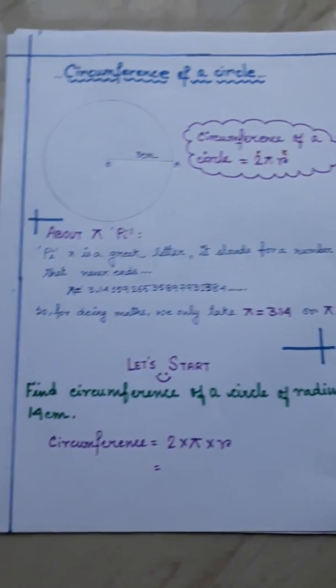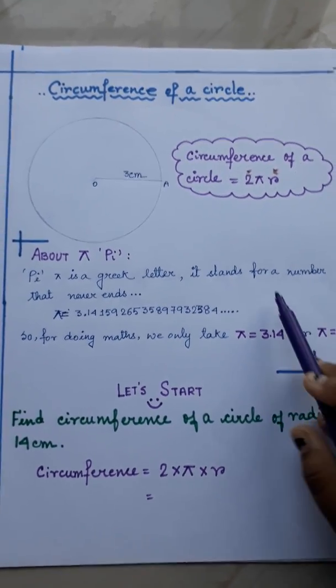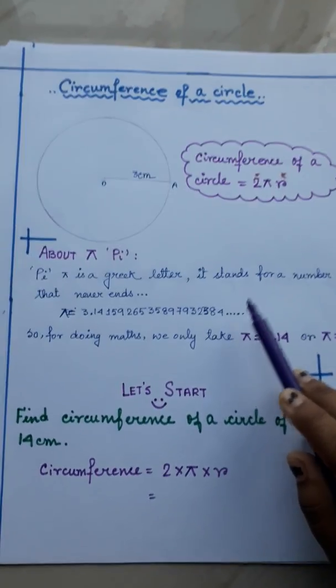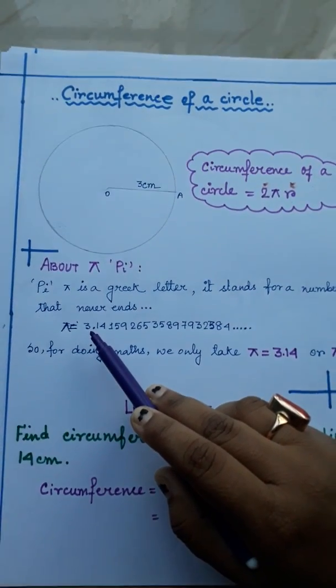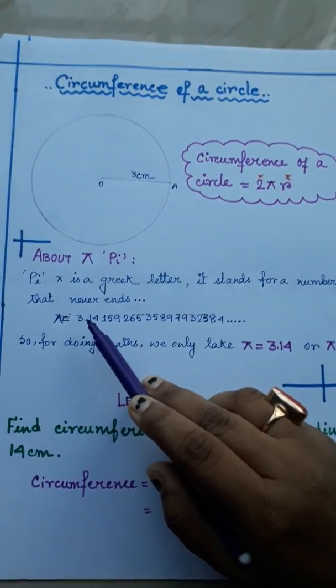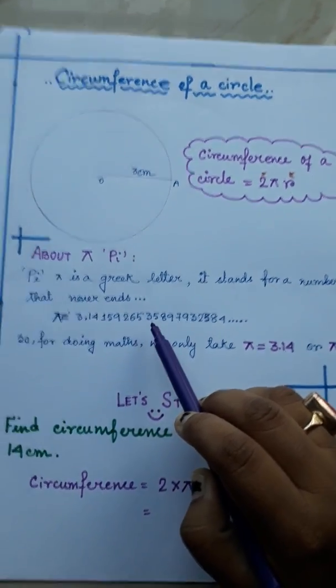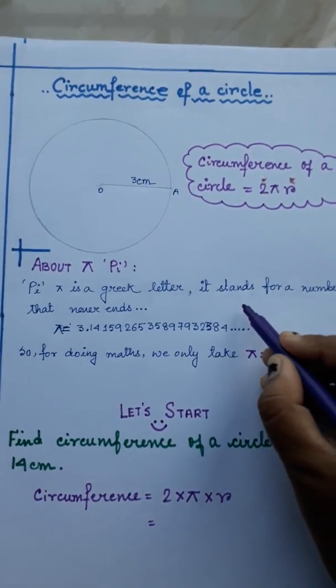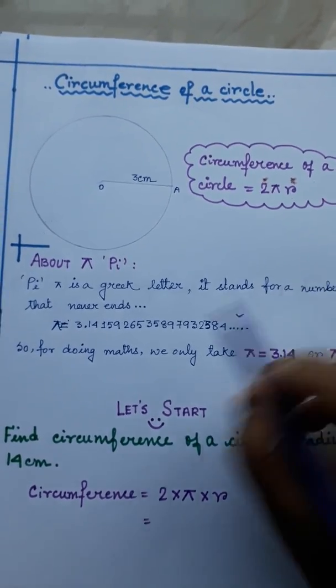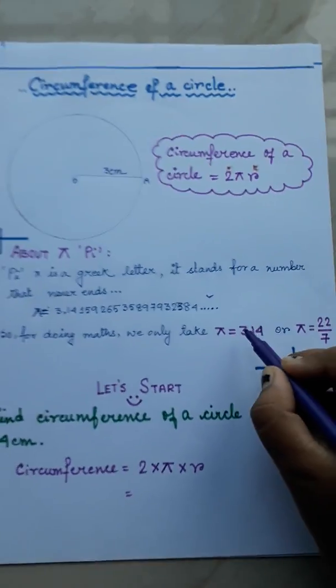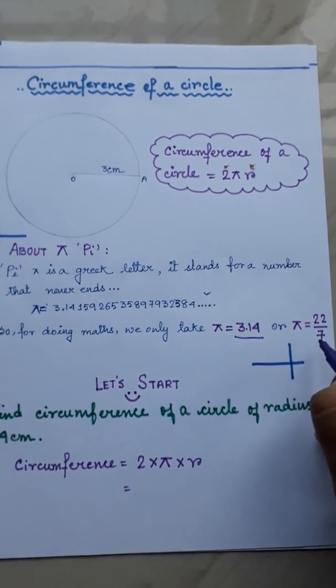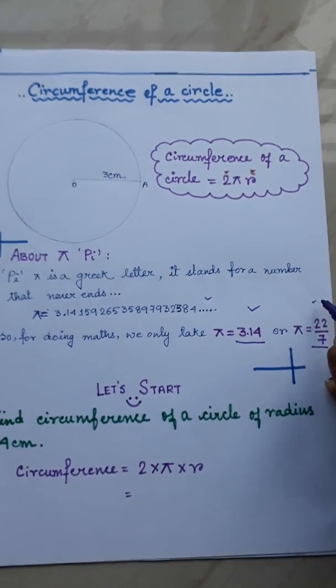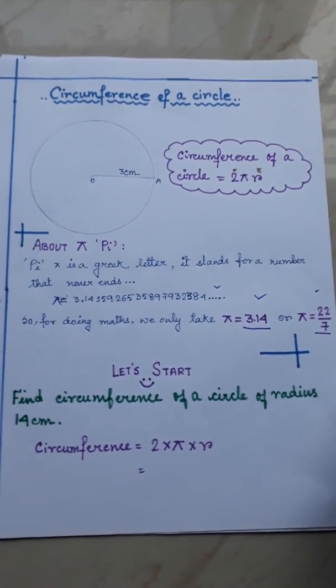Here about pi. Pi is a Greek letter. It stands for a number that never ends. The exact value of pi is 3.1415926535897932584... But it doesn't stop here. It goes on. So for doing maths, we only take pi equals to 3.14 or pi equals to 22 by 7. These two values we take whenever we do maths for our convenience.